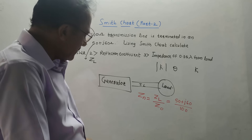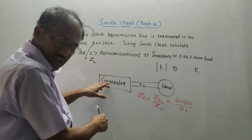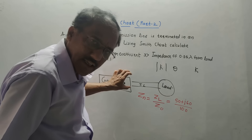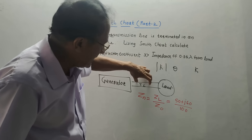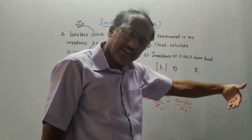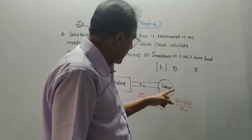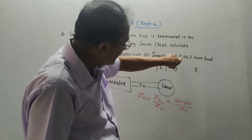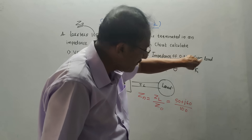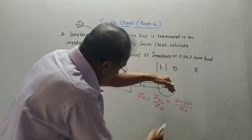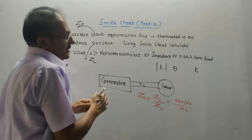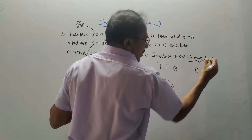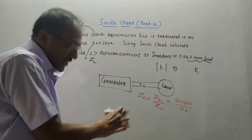Remember some basic things. In a transmission line, at one end we have a generator which generates the signal. These signals are transmitted through the transmission line to the load terminal at the other end. The phrase 'from the load' means towards the generator — this is very important.